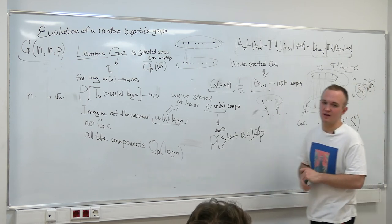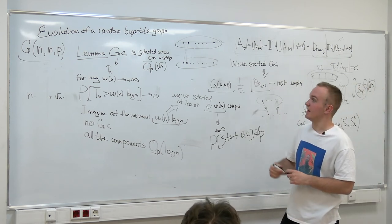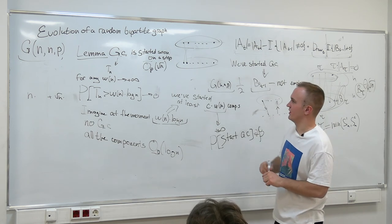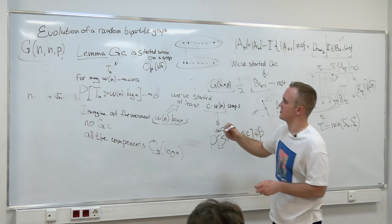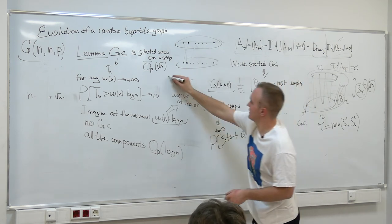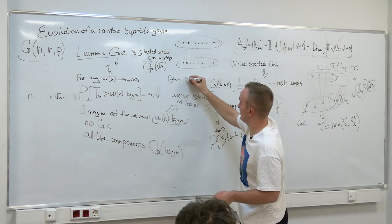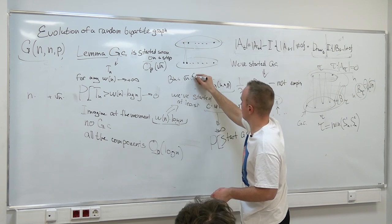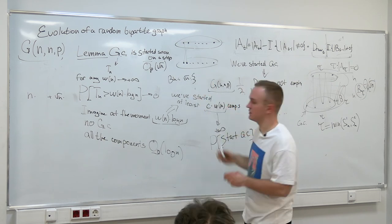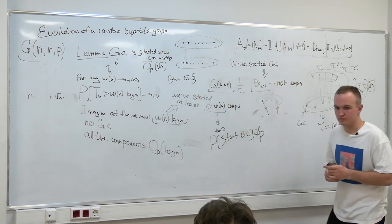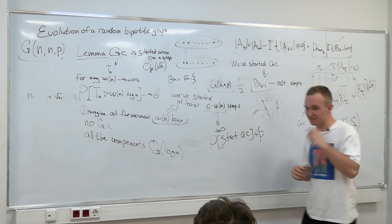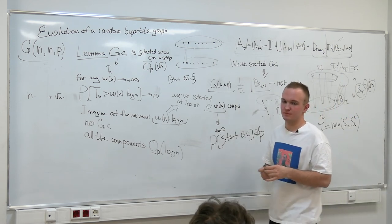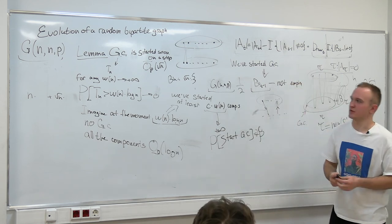We wanted to prove a more precise result: beta N plus something times square root of N. If you prove it's beta N plus square root of N in both parts, then you sum up, and yes it follows.